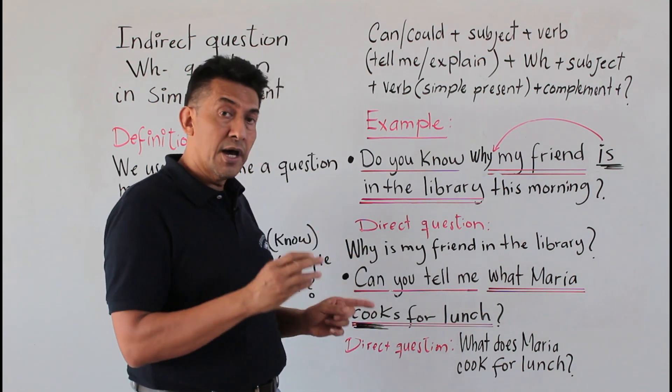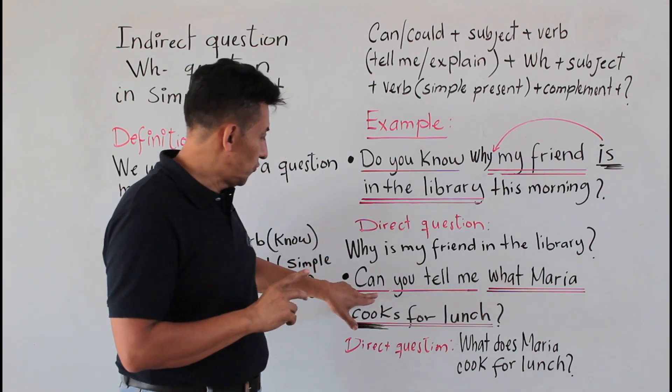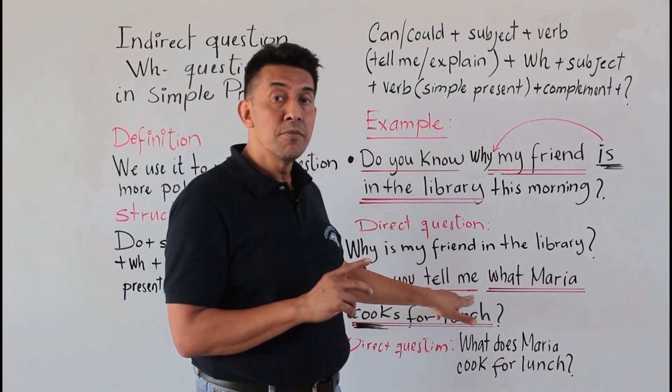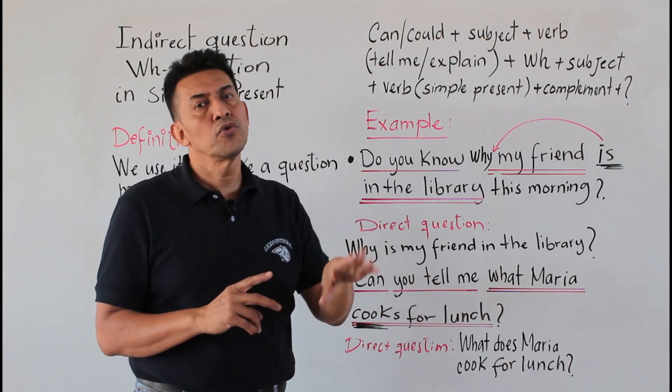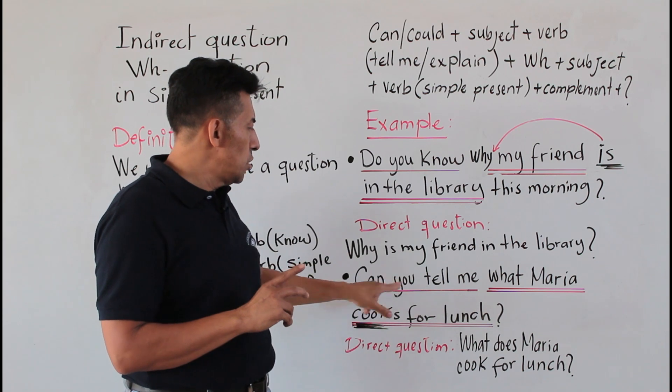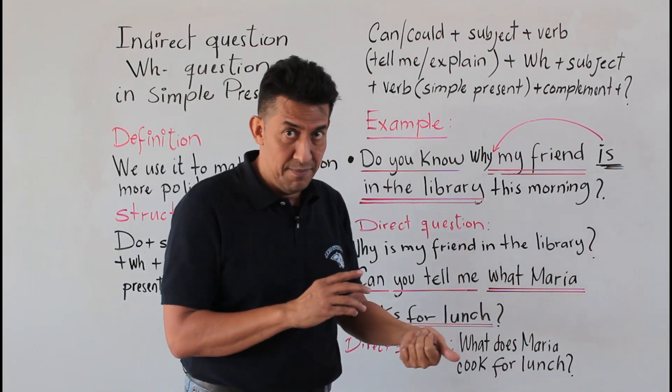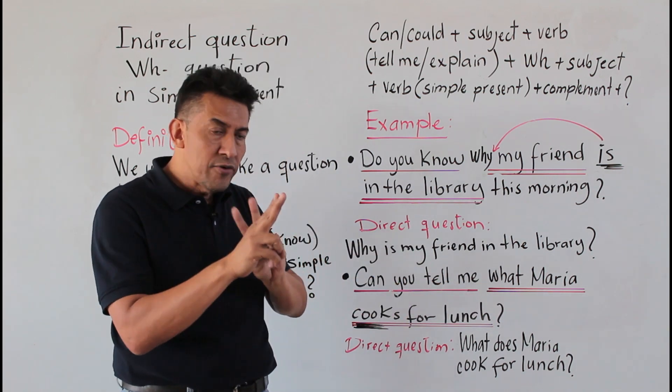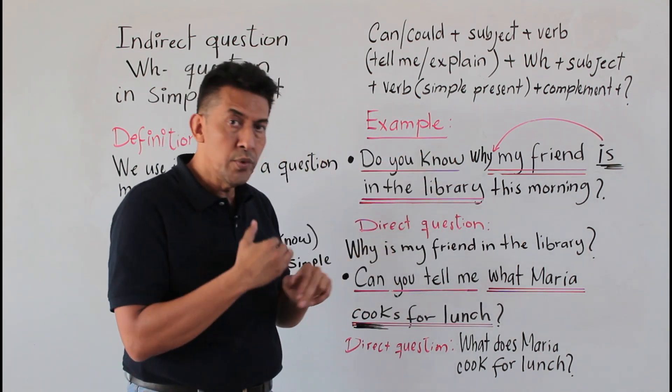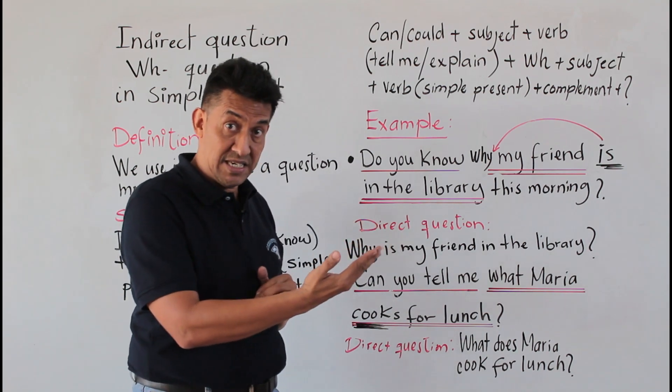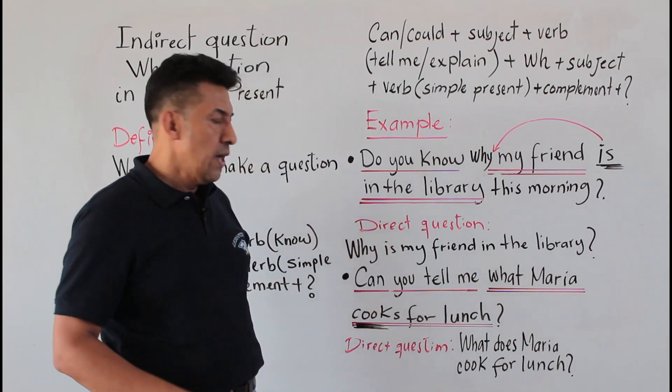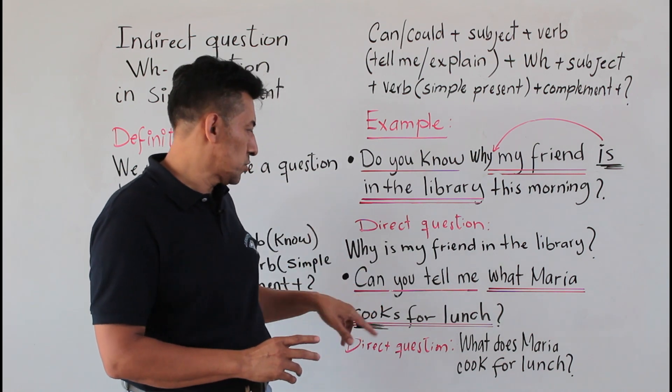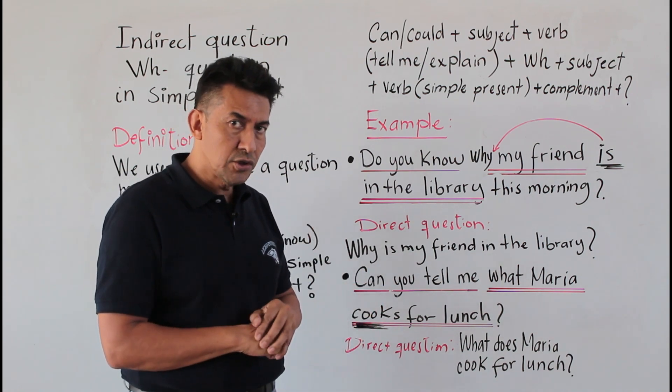Okay, let's take a look at the second sentence. Now using the auxiliary can. 'Can you tell me,' or you can also use 'can you explain.' Then you use another wh-question, and in this opportunity we're using what. Let's read it: 'Can you tell me what Maria cooks for lunch?' That is the question.